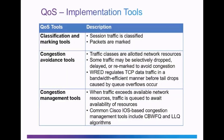We can categorize QoS implementation tools into three broad categories: classification and marking tools, congestion avoidance tools, and congestion management tools. Under classification and marking tools, session traffic is classified into different priority groupings and packets are marked. Under congestion avoidance tools, traffic classes are allotted network resources, and some traffic may be selectively dropped, delayed, or remarked to avoid congestion.